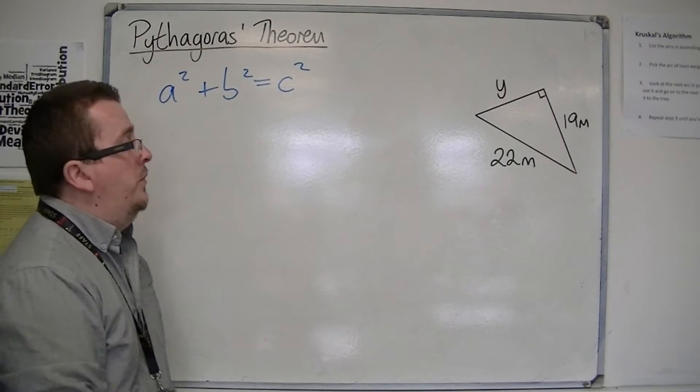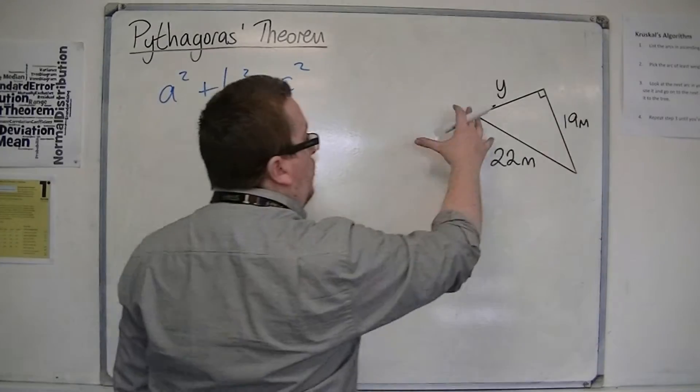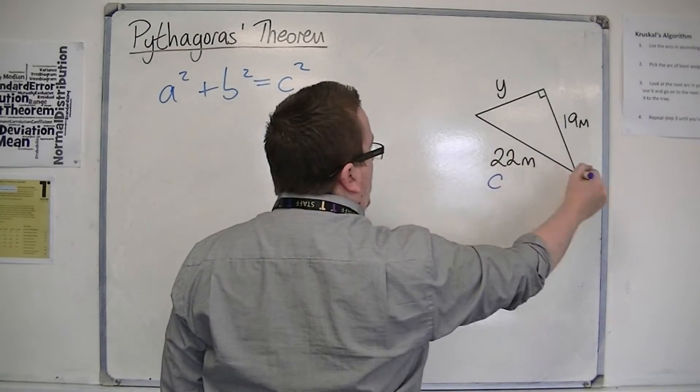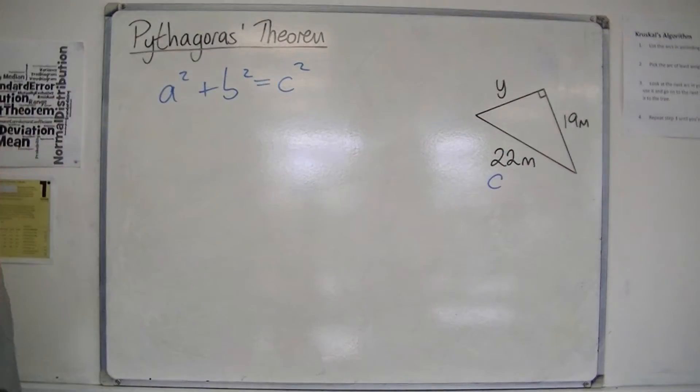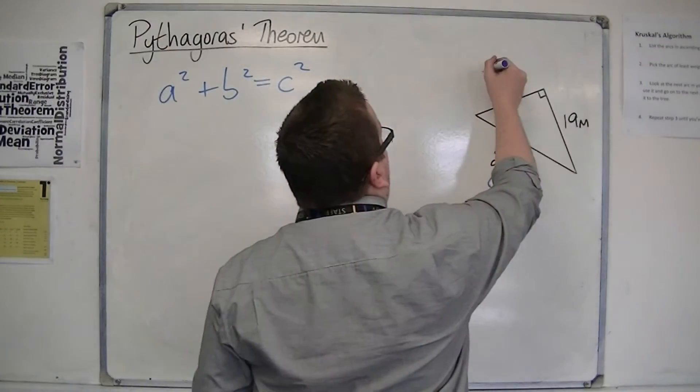We then label the triangle, so remember c is always the hypotenuse, the length of the longest side opposite the right angle, and the a and the b are the other two sides.